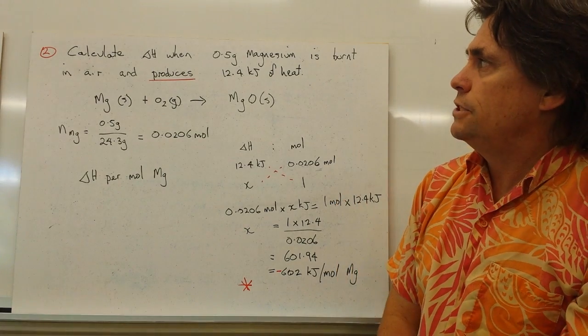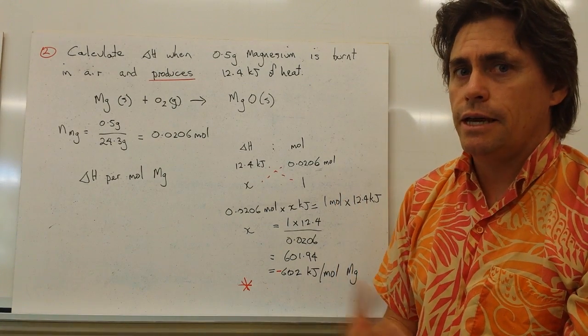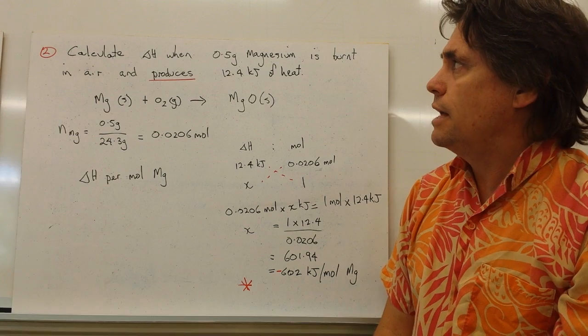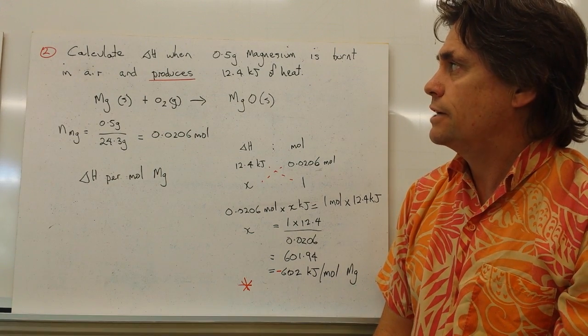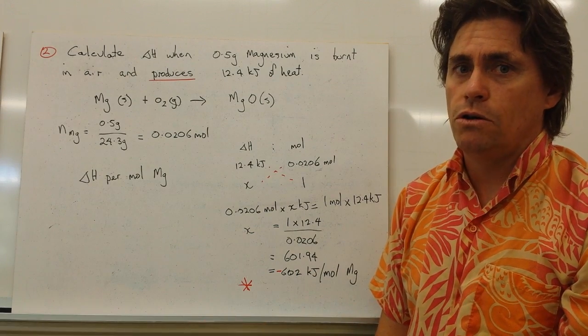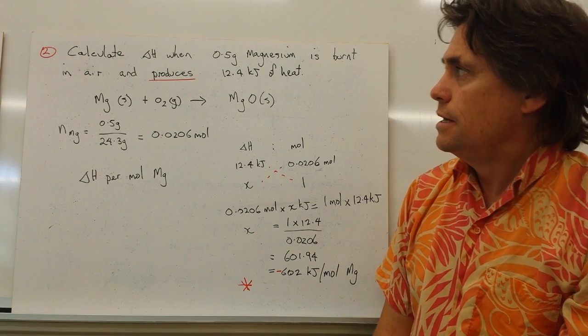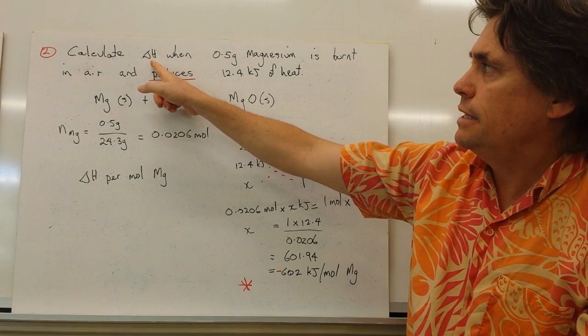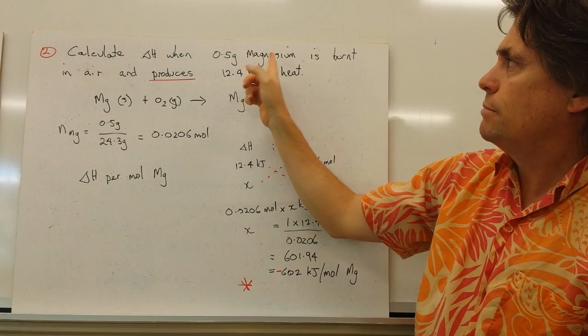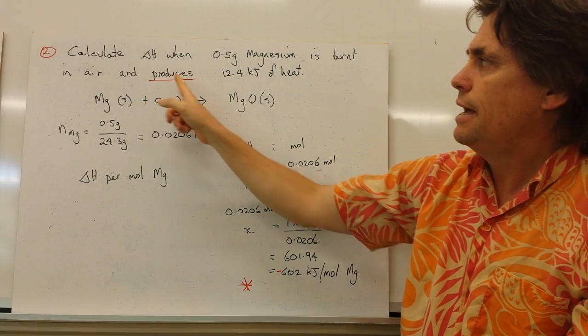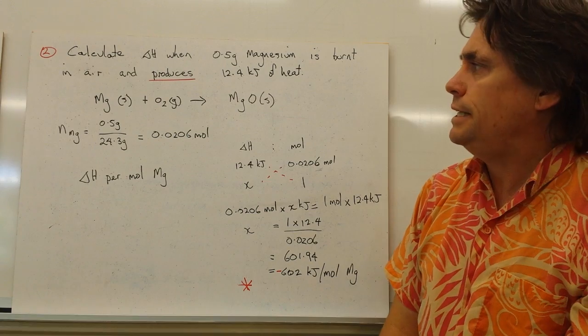In our second type of situation, we can take a chemical reaction and we can calculate the enthalpy of the reaction, or the change in enthalpy, per mole of reactants or products. So our question says calculate the delta H value, and it should be per mole, when 0.5 grams of magnesium is burnt in air and produces 12.4 kilojoules of heat.